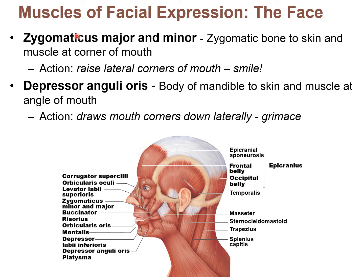Some other muscles of facial expression: there's a zygomaticus major and a zygomaticus minor — that's two muscles there. All three of these muscles insert onto the corner of the mouth. The zygomaticus major and minor pull up on that corner because their origin is on the zygomatic bone, the cheekbone. Both muscles pull up and laterally on the corner of the mouth from either side, raising the lateral corners of the mouth — which helps you with your smiling expression.